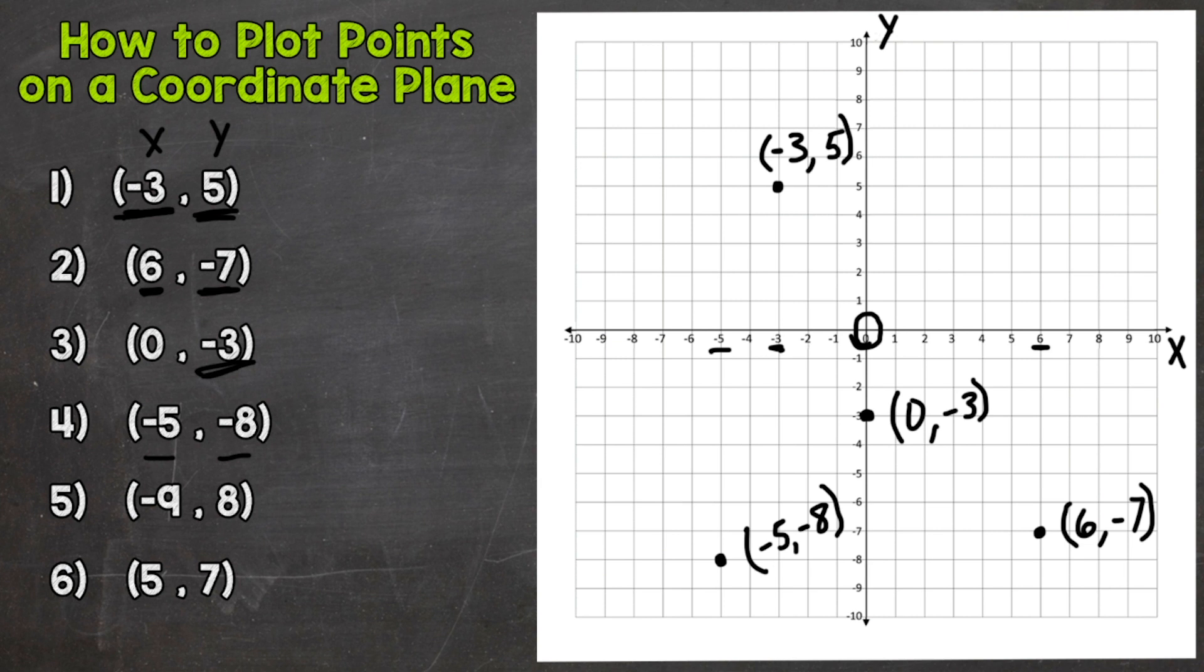Number 5, we have a negative x-coordinate and a positive y-coordinate. So we start in the center, go over to negative 9. And then up 8. Because again, that y-coordinate is positive. So we go up 8 and plot our point. So negative 9, 8.